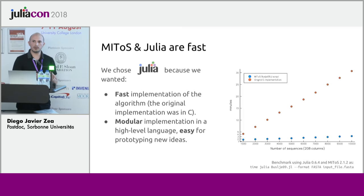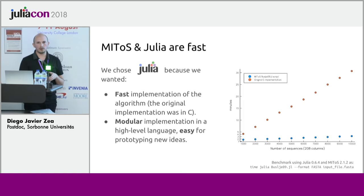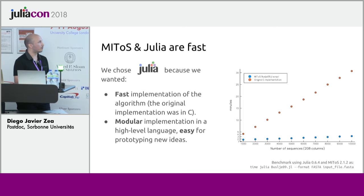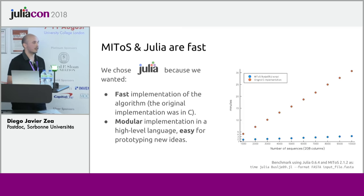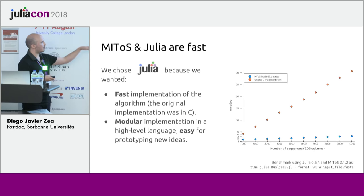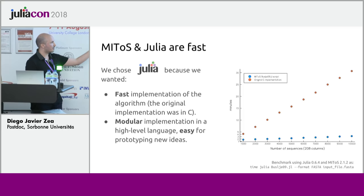The initial implementation we had was in C because it's fast, but we wanted a more modular and easy-to-work interface. So we moved to Julia because it's fast and it's a high-level language that allows us to have a more modular implementation so we can intervene at each step of the pipeline. And as you can see, the implementation in Julia is actually faster than the original implementation in C, even taking into account the compilation time when running it as a simple script.